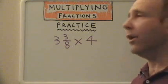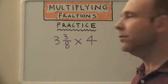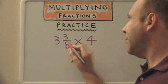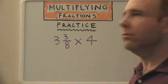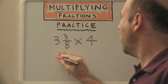Okay, the first thing we're going to do is change this mixed number to an improper fraction. So we multiply the eight by the three, which is twenty-four. Add our three, which is twenty-seven, over eight.